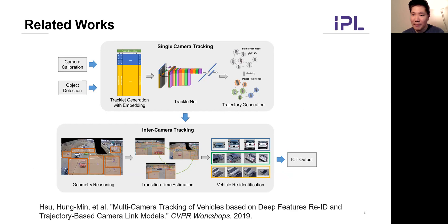To overcome the difficulty of MTMCT, some systems have been proposed in the past few years. The state-of-the-art methods consist of two steps: single-camera tracking and inter-camera tracking. For inter-camera tracking, the main approach is to use video-based Re-ID to associate single-camera tracking results and apply the camera link model as a constraint to reduce Re-ID candidates. However, the camera link model requires manually labeled zones and zone links, and existing methods only consider appearance features without topological information.